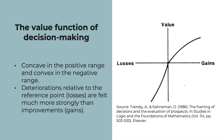This leads to the next argument: deteriorations relative to a reference point — that is, losses — are felt much more emotionally strongly than improvements, namely gains. The researchers propose that outcomes of a decision problem are often perceived as positive or negative in relation to a reference point, which is in a sense neutral. Based on this reference point, we decide whether an outcome feels like a gain or a loss. These reference points can sometimes even be set by social norms or expectations.